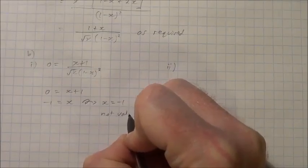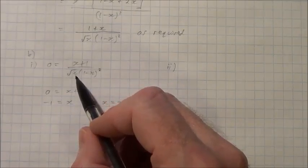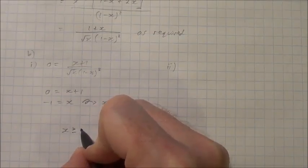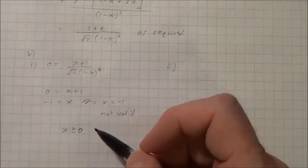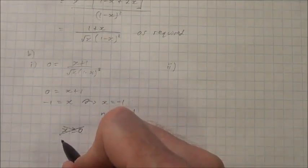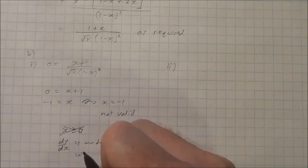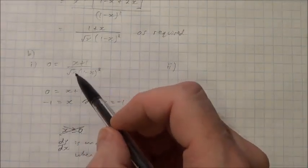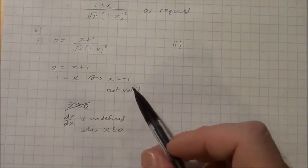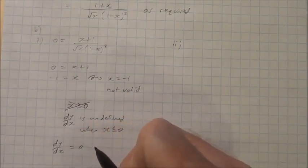that's not valid. Looking at the root part of the denominator, the function dy/dx is actually undefined when x is less than or equal to 0. Because negative 1 is in this range of being less than or equal to 0, it's not valid. Therefore, dy/dx equals 0 never.